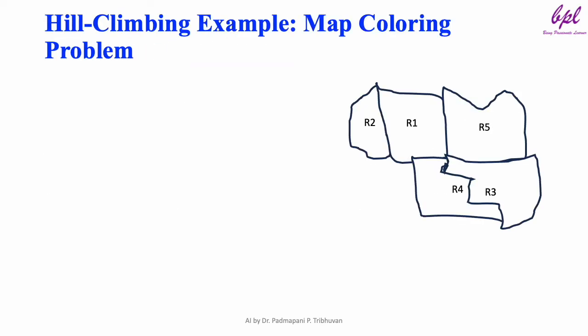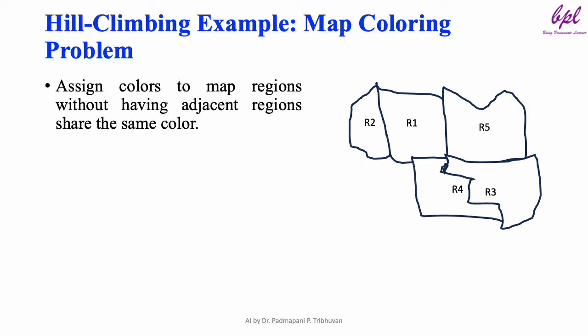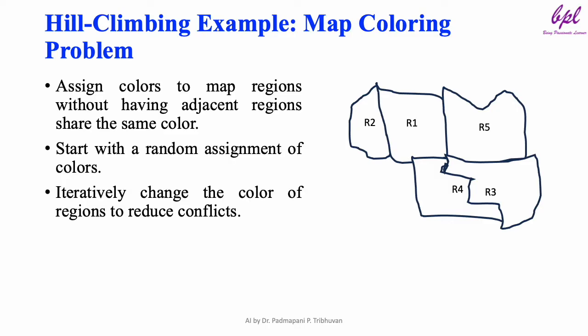Hill climbing example: map coloring problem. Let's apply hill climbing to the map coloring problem. Our goal is to assign colors to the regions of a map such that no two adjacent regions share the same color. We begin with a random assignment of colors and then iteratively change the color of regions to reduce conflicts. Over time, this leads to a solution where no neighboring regions share the same color.